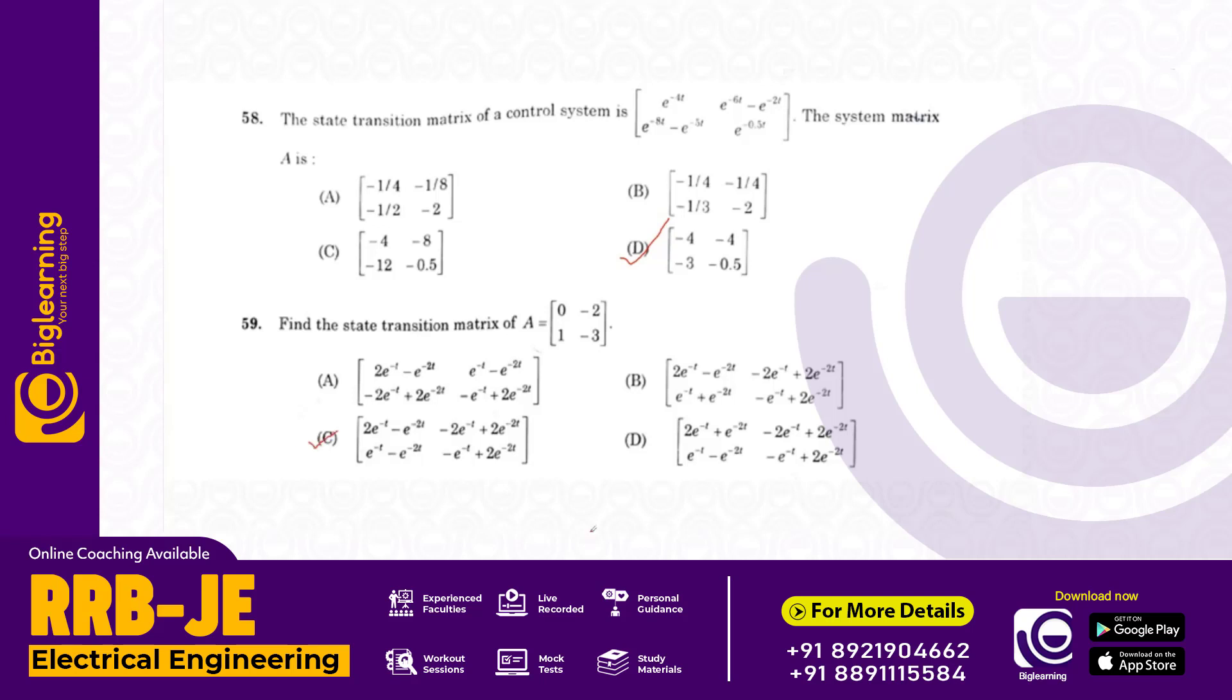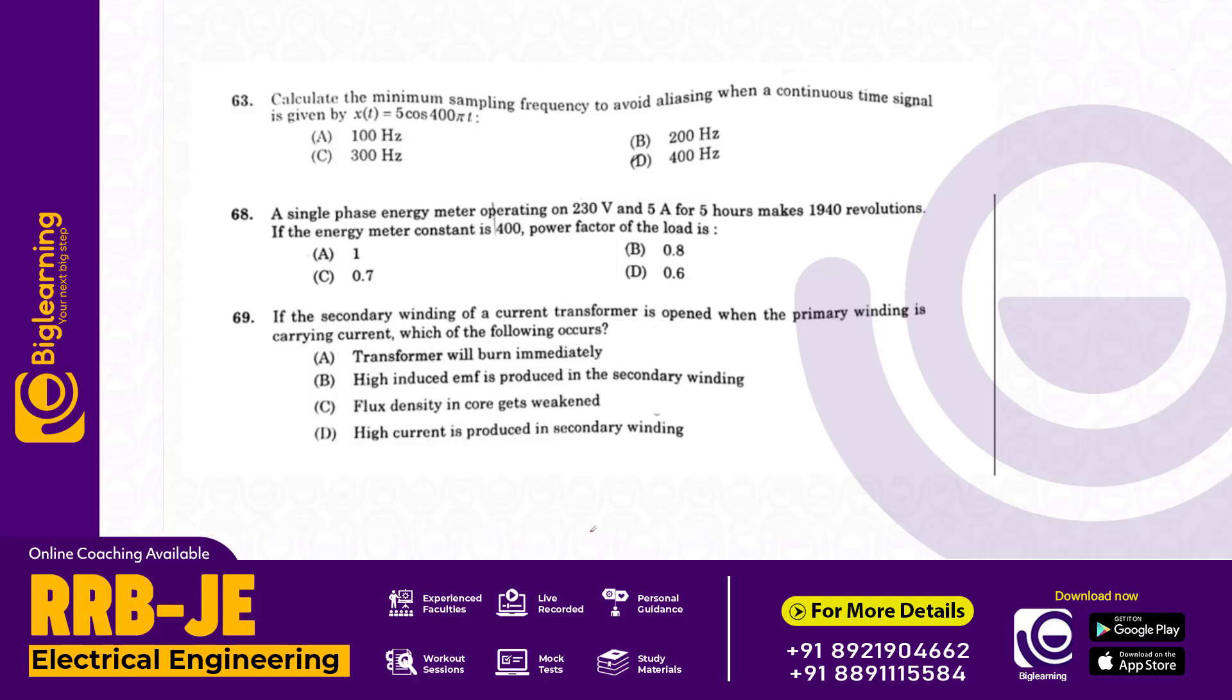Calculate the maximum sample frequency to avoid aliasing when a continuous time signal is given by x of t equals 5 cos 400 pi t. Using the equation sample frequency is equal to or greater than 2 FM, the answer is D: 400.